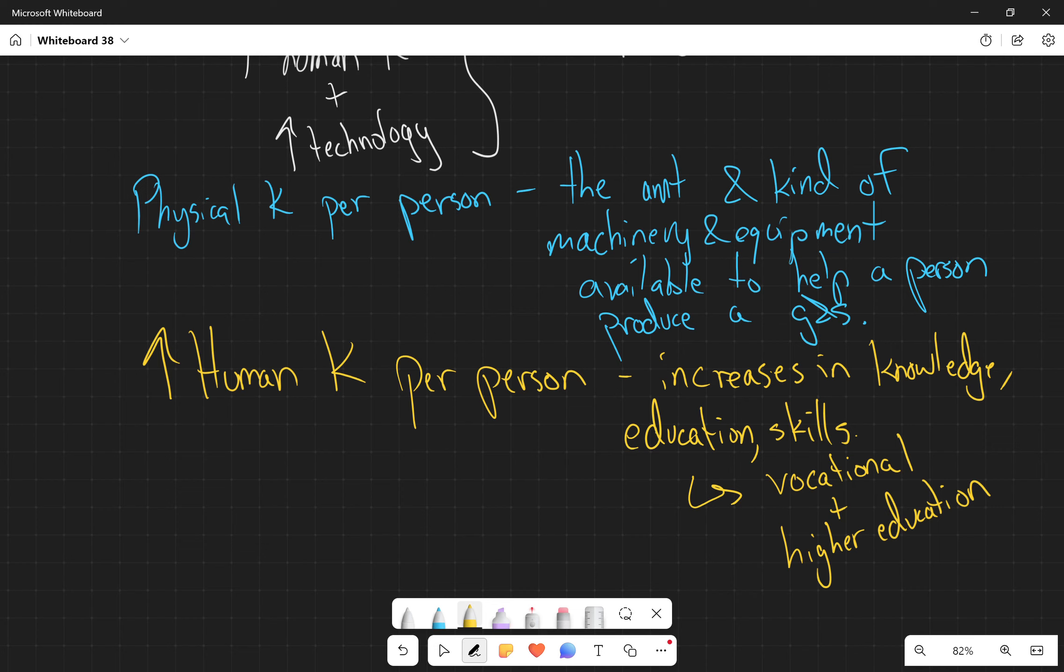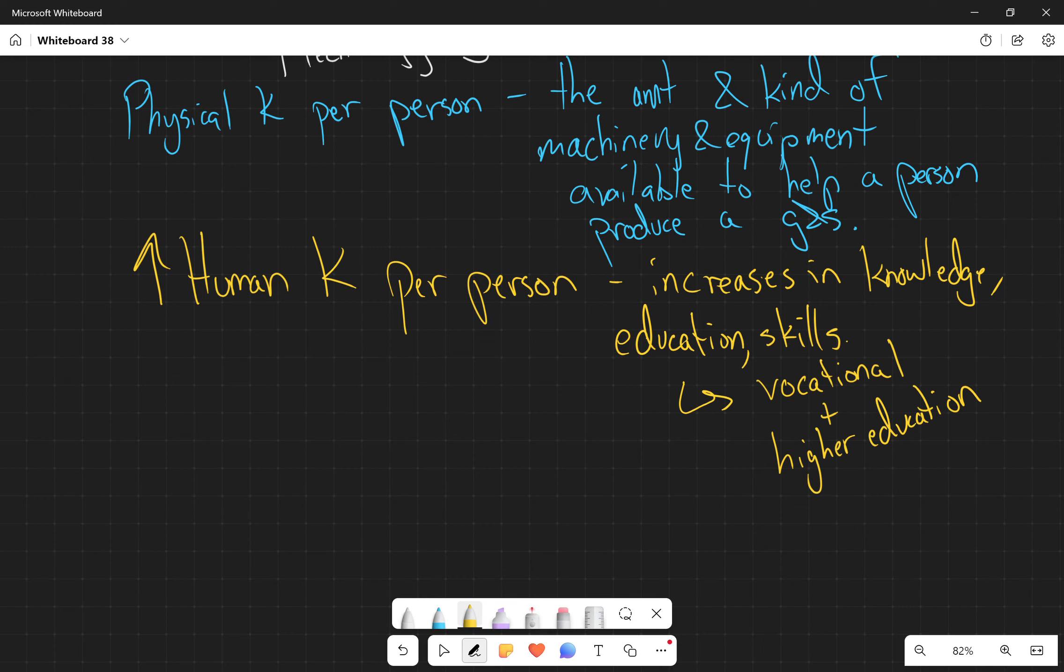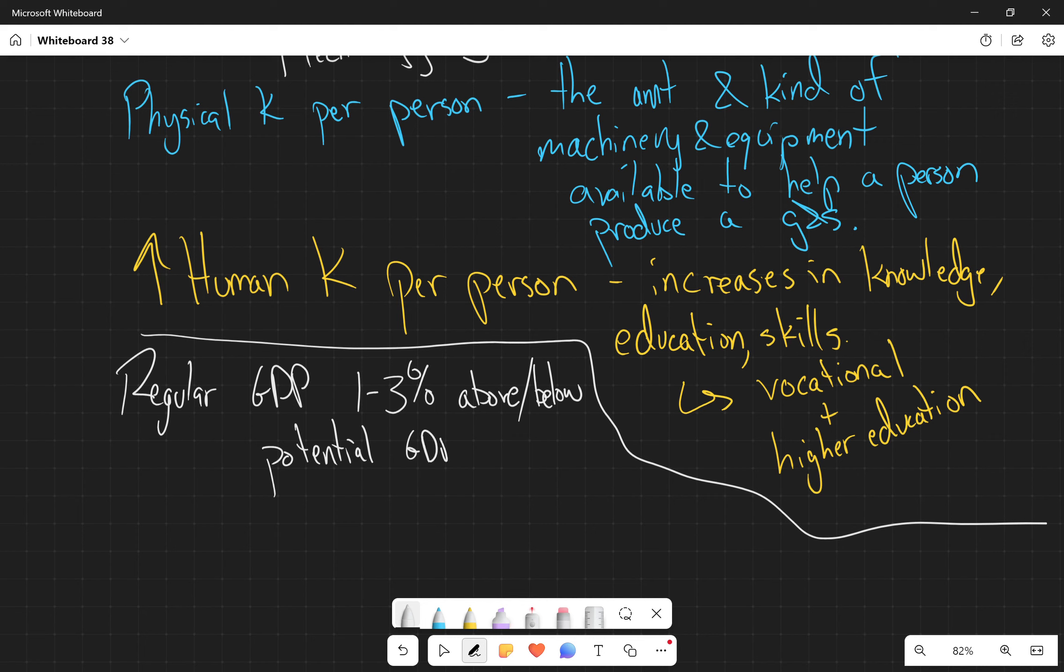So when we're looking at potential versus actual GDP, it aligns pretty closely. Potential is usually 1% to 3% above or below the regular GDP. GDP during, if it's above, it's an expansion and it's below, it's a recession.